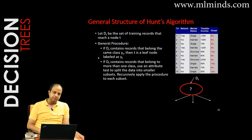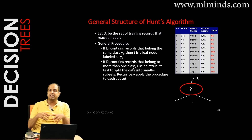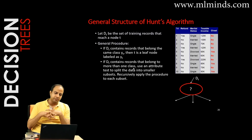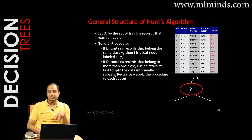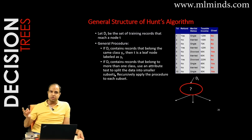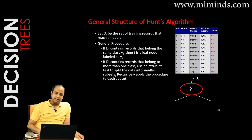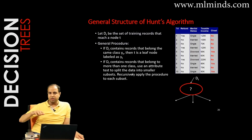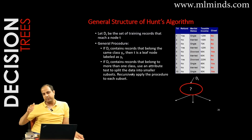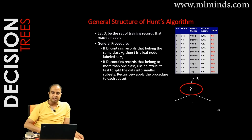On the other hand, if DT contains records from more than one class — a mix — then use an attribute test to split the data into smaller subsets, typically two children: left and right. Then recursively apply the procedure to each subset, checking whether children can be leaf nodes or need further splitting.